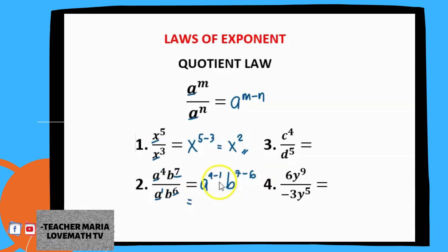4 minus 1 is 3. So we have a raised to 3, and then b, 7 minus 6 is 1. Since the exponent is 1, you don't need to write it. If the variable has no exponent, it means its exponent is 1. It's understood that the exponent is 1, so you don't need to write it. The final answer is a raised to 3 and then b.